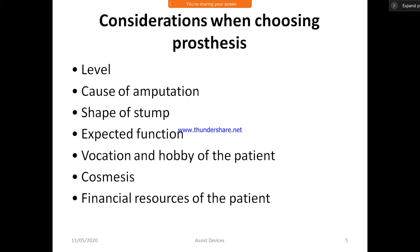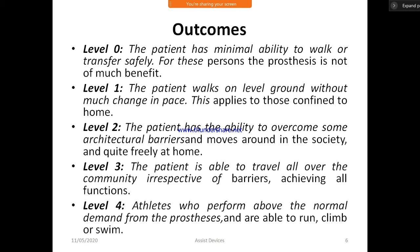The level refers to what level the person is affected. The reason refers to the cause of amputation. The shape of the stump is considered, along with what functions the patient needs after rehabilitation. The patient's occupation and hobbies are also considered, as is cosmesis — whether the artificial limb affects cosmetic appearance — and the patient's financial resources.